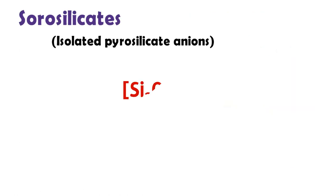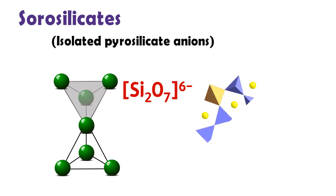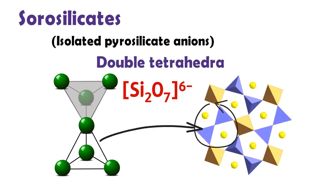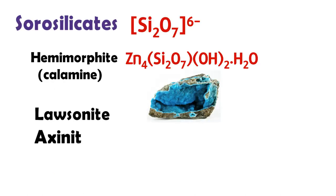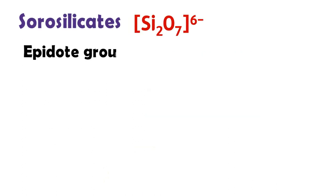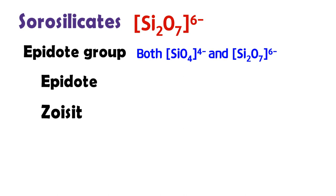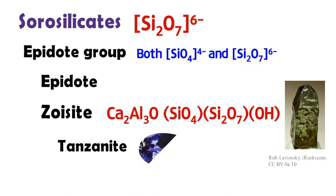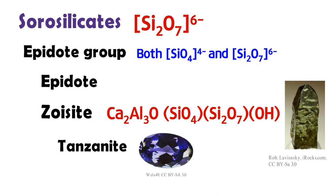Sorosilicate have isolated pyrosilicate anion Si₂O₇⁶⁻, consisting of double tetrahedra with a shared oxygen vertex. Sorosilicates include hemimorphite, roselite, axinite, and ilvaite. Also, the epidote group, having both SiO₄ and Si₂O₇⁶⁻, includes epidote and zoisite. Tanzanite is the blue and violet variety of the mineral zoisite, caused by a small amount of vanadium.